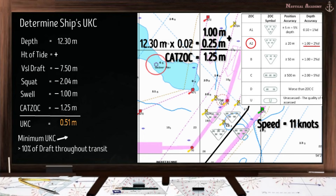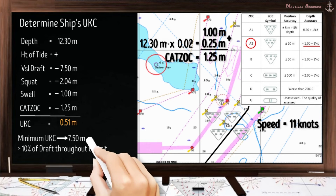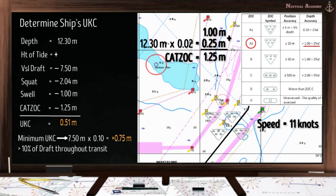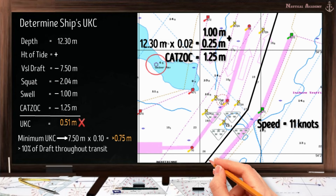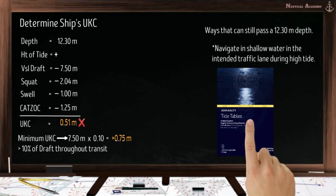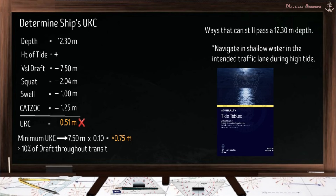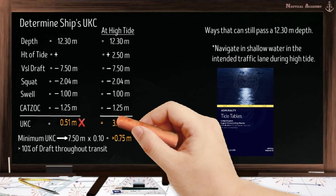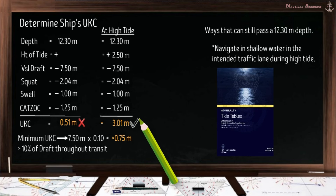To find the minimum UKC, we multiply the ship's draft of 7.50 meters by 10%: the minimum UKC should be greater than 0.75 meter. In this case, we did not meet the minimum UKC requirement. Is there any way to still pass the intended traffic lane? Yes — the primary option is to wait for high tide. Using tidal tables, let us assume the height of tide is 2.5 meters during high tide. By adding this, the ship's UKC becomes 3.01 meters — four times greater than the required minimum.